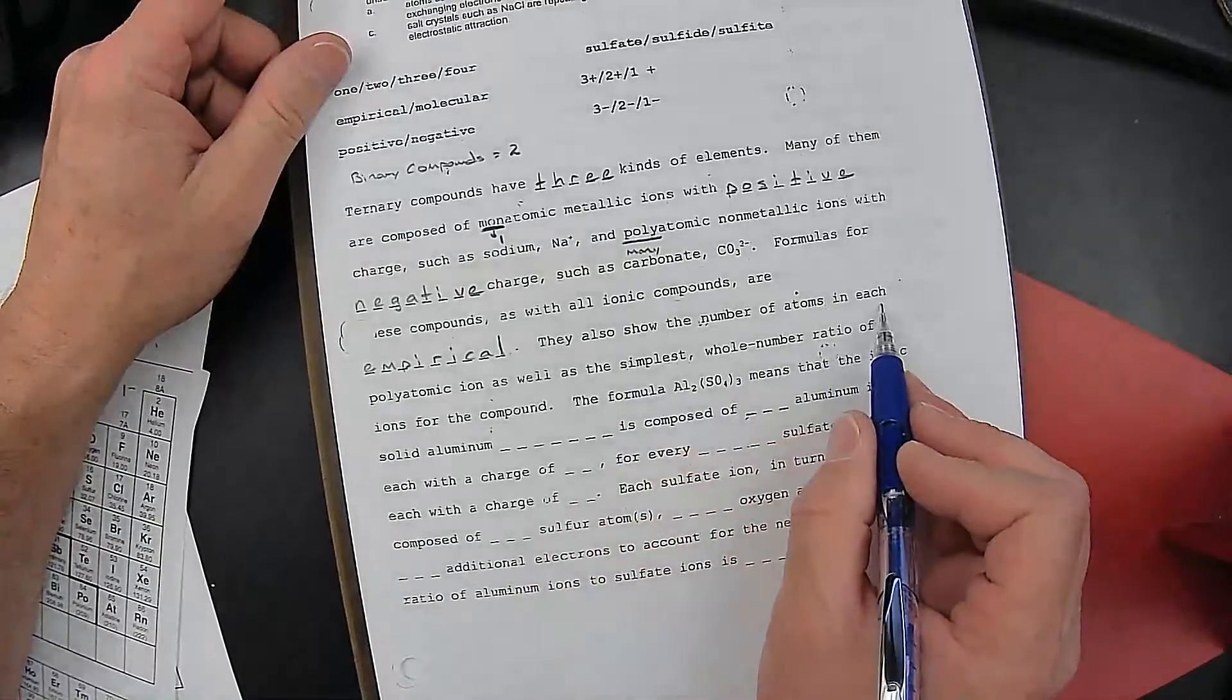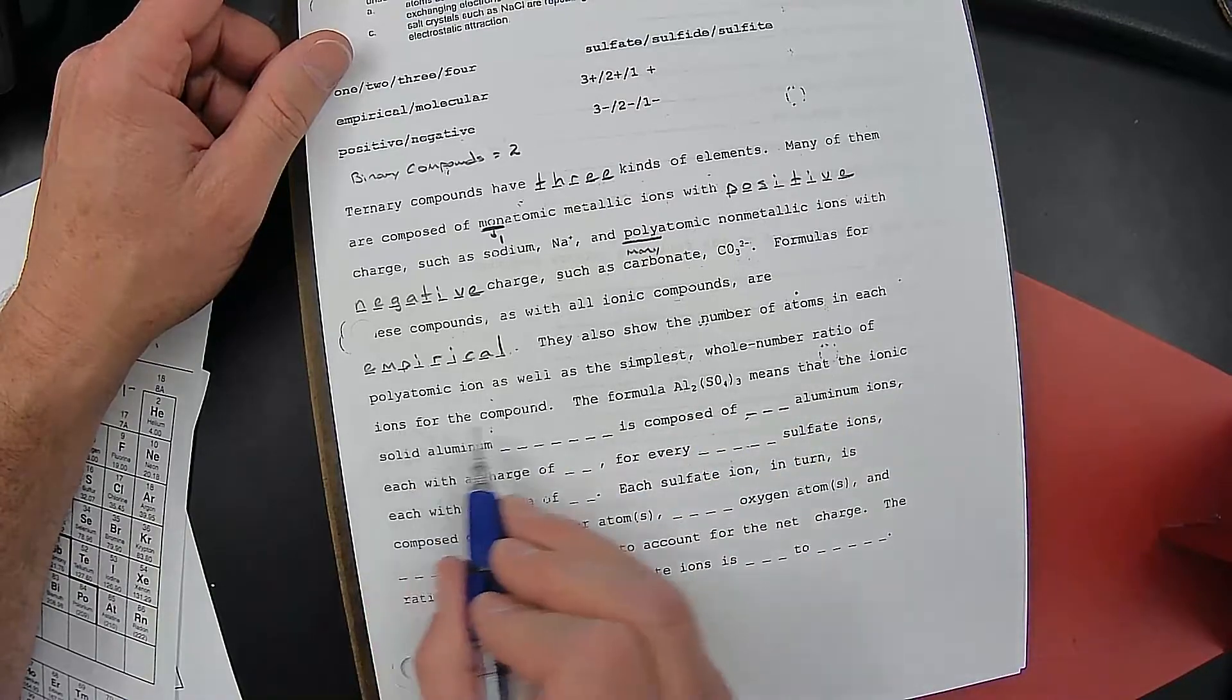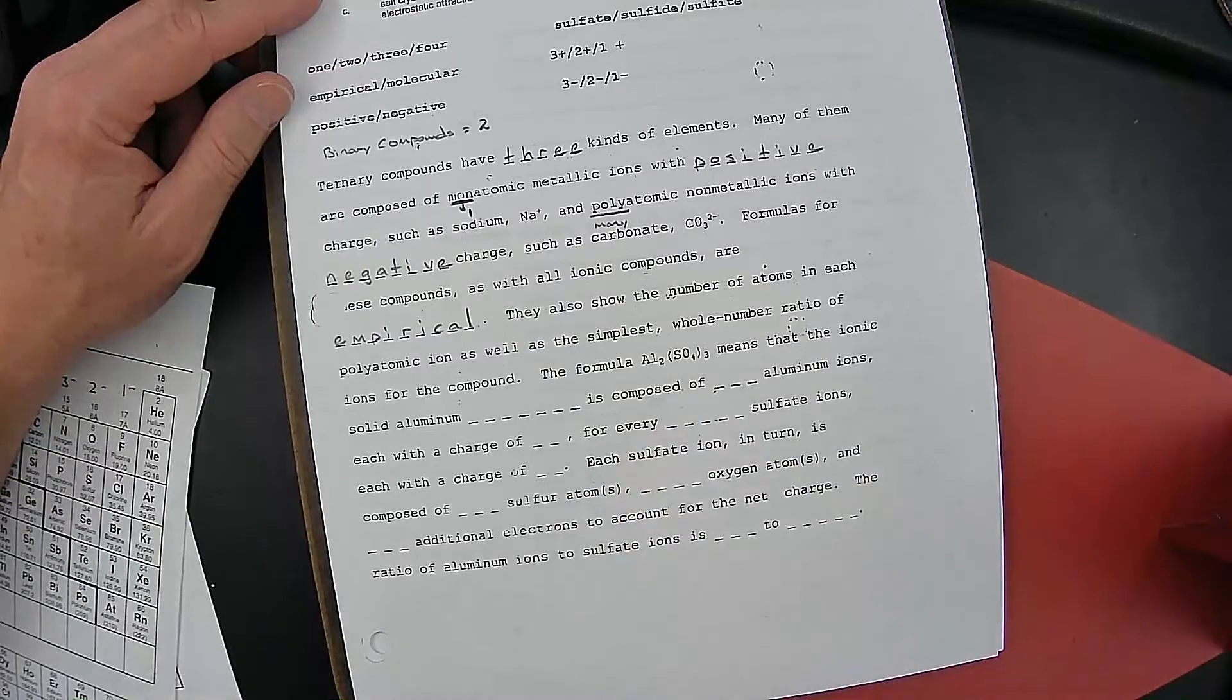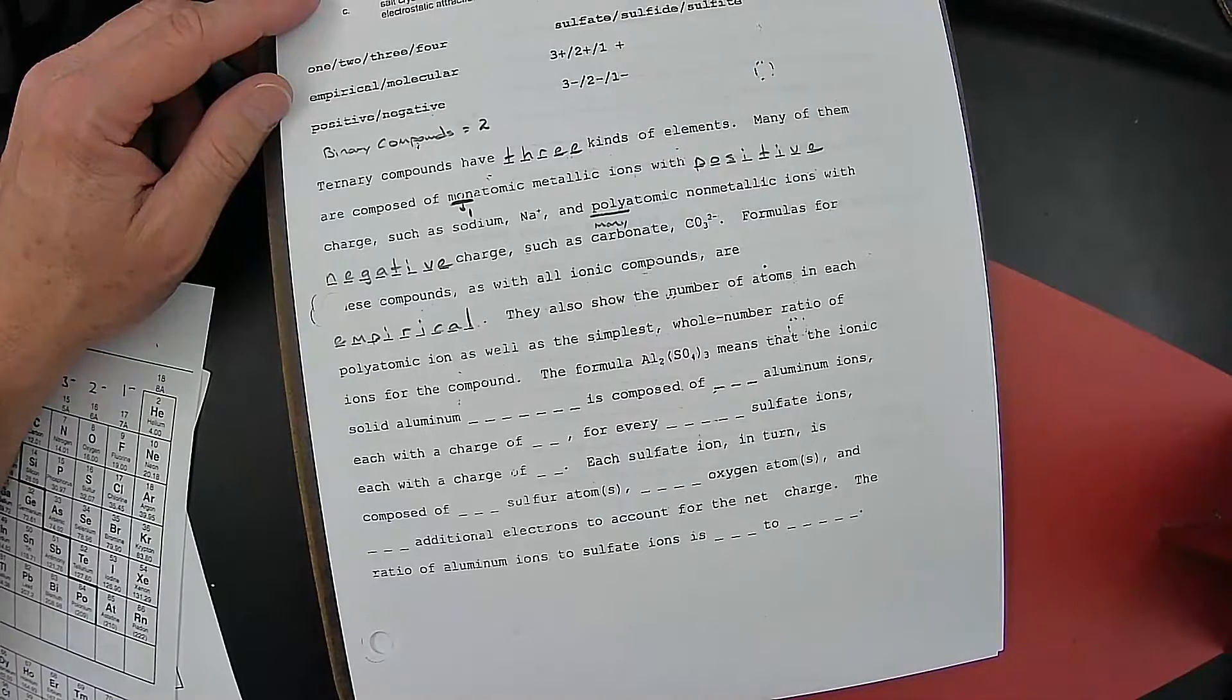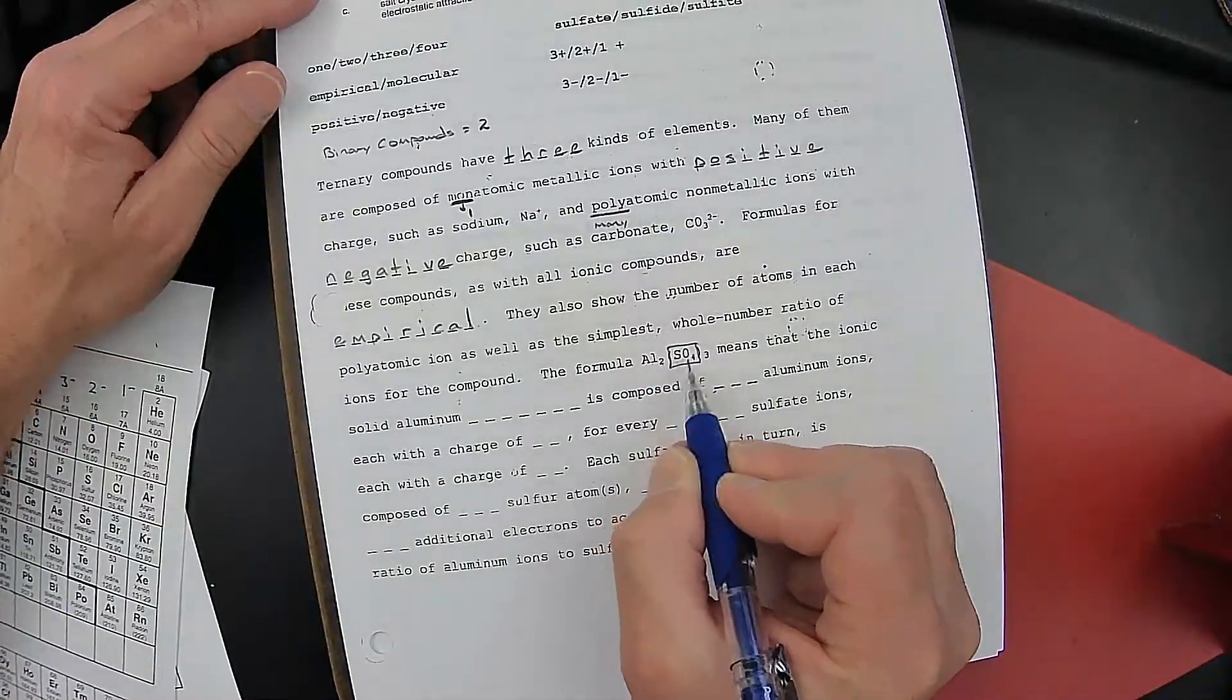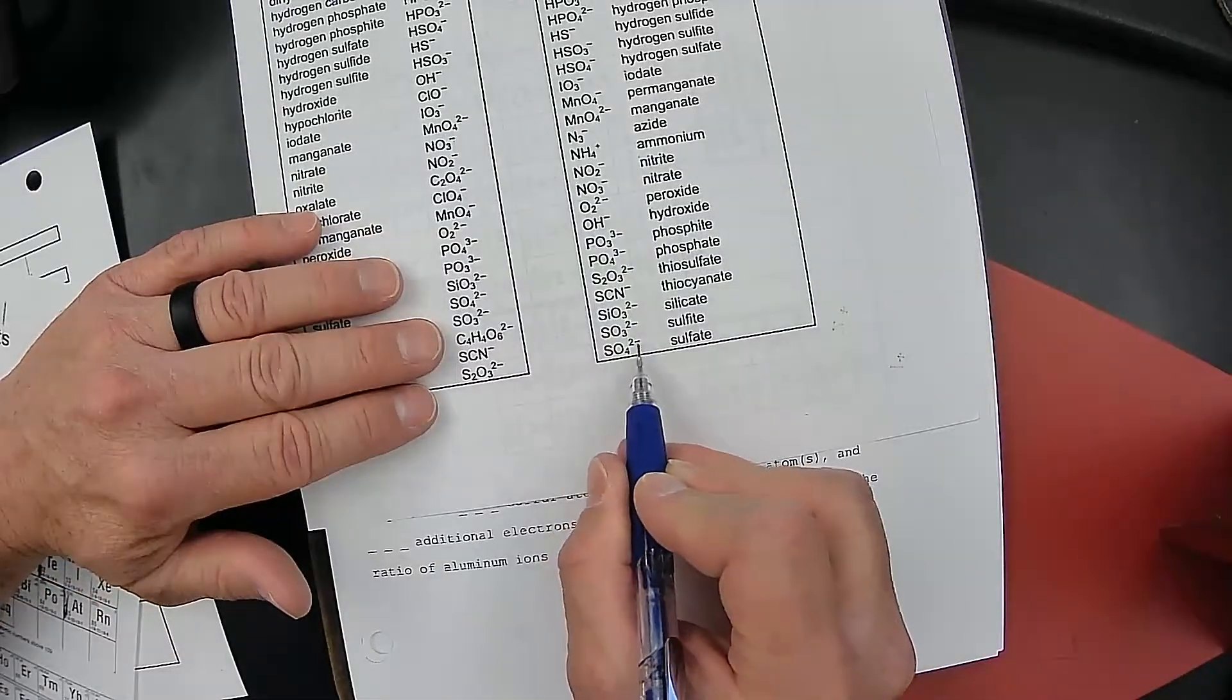They also show the number of atoms in each polyatomic ion, as well as the simplest whole number ratio for the ions in the compound. So now what we're going to do is we're going to dissect Al2(SO4)3. Notice we've got some parentheses here, and we're going to learn about how to write those formulas soon. This means the ionic solid aluminum, and now I've got to figure out what the name is of this SO4. So I go to my polyatomic ion chart. I find SO4. SO4, it's a 2 minus charge, and its name is sulfate.